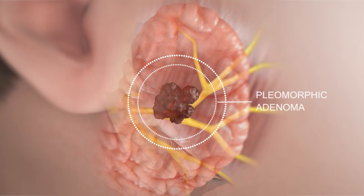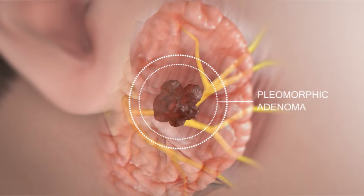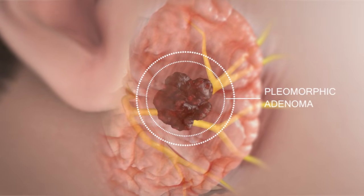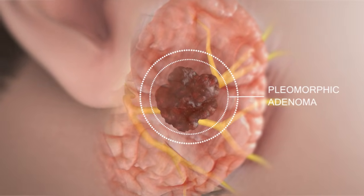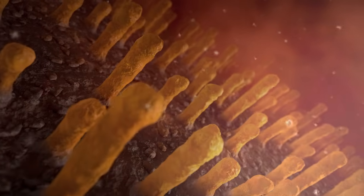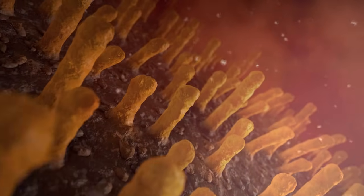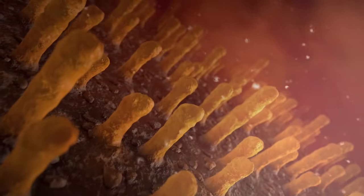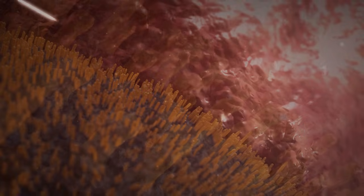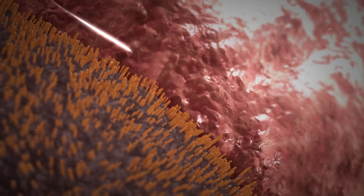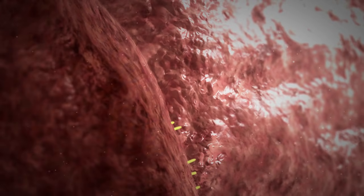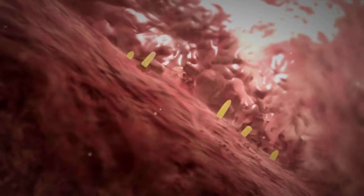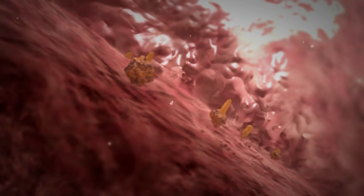The most common one is called pleomorphic adenoma. Pleomorphic adenomas are unique in that they have microscopic finger-like projections on the surface of the tumor. So when pleomorphic adenomas are removed, the surgeon must be thorough and completely get around all these projections — otherwise, the tumor will come back after several years.